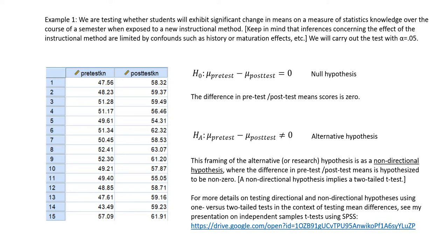Keep in mind that inferences concerning the effect of the instructional method are going to be limited by confounds such as history or maturation effects. Nevertheless, what I'm showing you is a common application of the paired samples t-test when using repeated measures data.